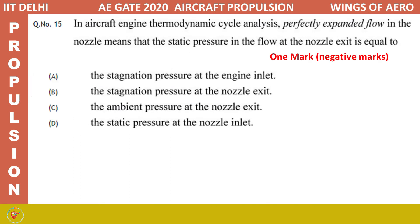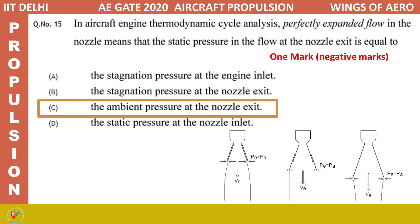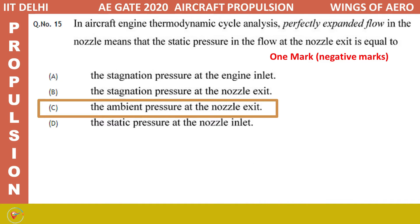The next question: in aircraft engine thermodynamic cycle analysis, perfectly expanded flow in the nozzle means that the static pressure at the nozzle exit equals which of the following? Options are: stagnation pressure at engine inlet, stagnation pressure at nozzle exit, ambient pressure at nozzle exit, or static pressure at nozzle inlet. The correct answer is (c): ambient pressure at the nozzle exit, because in perfectly expanded flow, exit pressure Pe equals ambient pressure Pa.